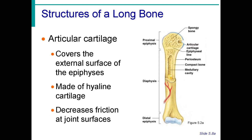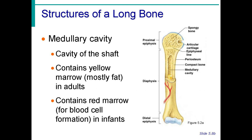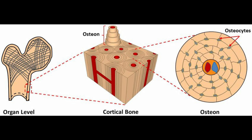Another part of the long bone is the articular cartilage, found at the top of the epiphysis. Its main function is to decrease friction at joint surfaces where the epiphysis connects to another bone's epiphysis. It is made up of hyaline cartilage. The medullary cavity is in the middle of the diaphysis shaft and contains yellow marrow and red bone marrow. Yellow marrow is mostly fat, and it can be converted to red marrow to increase blood cell production in cases of severe blood loss.